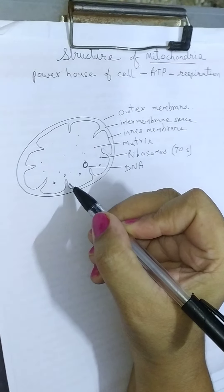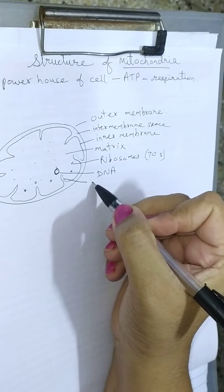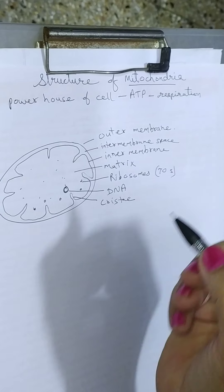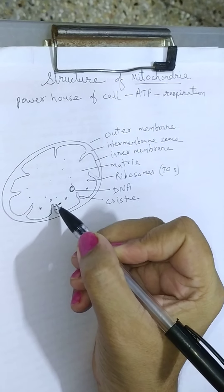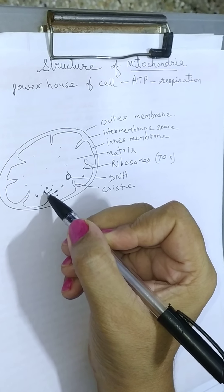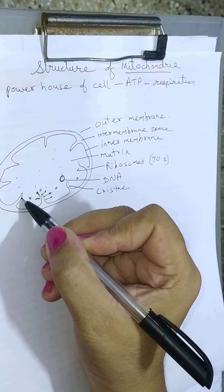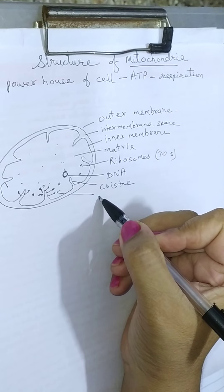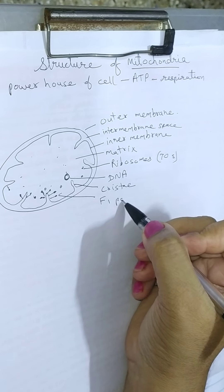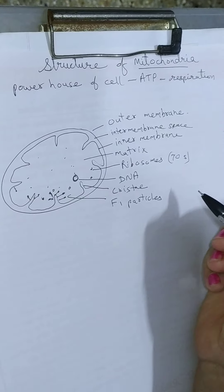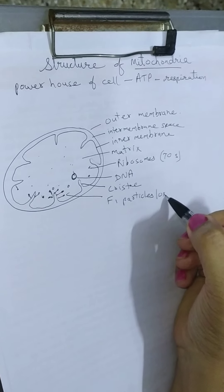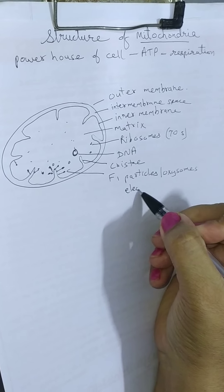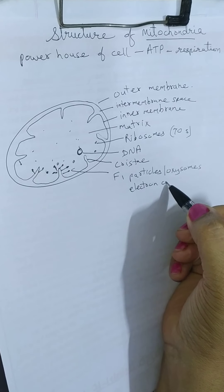The matrix also contains RNA. The finger-like projections of the inner membrane are called cristae. On the cristae, there are projections present throughout — they are called F1 particles. These F1 particles are also called oxysomes, and they are electron carriers.